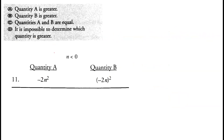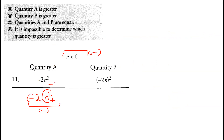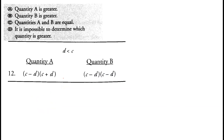Which quantity is greater? We know n is less than 0, so n is negative. For quantity A: minus 2n squared — since n squared is always positive, multiplying by minus 2 makes it always negative. For quantity B: (minus n) squared — a negative number raised to power 2 is always positive. So quantity B is always positive and quantity A is always negative. Option B is greater.